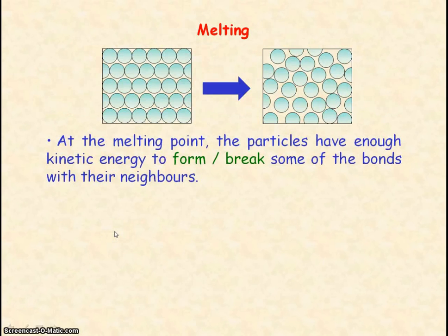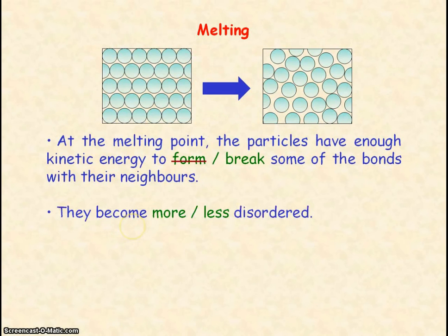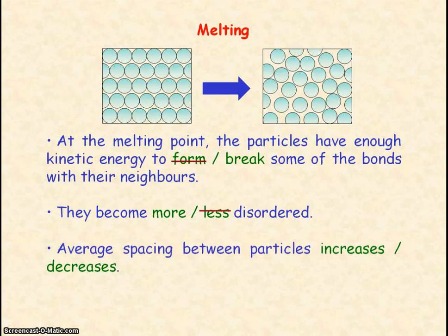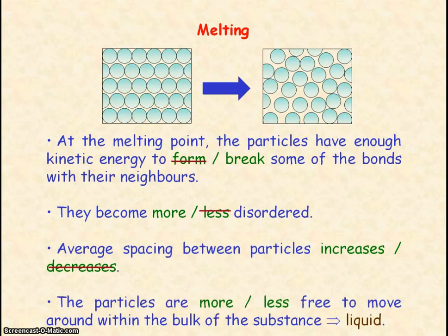For a solid to become a liquid, the particles need to have enough kinetic energy so that they can break some of the bonds with their neighbours. So the particles become less ordered, that is more disordered, so the average spacing between the particles increases and the particles are free to move around the bulk of the substance, meaning it is in the liquid phase.